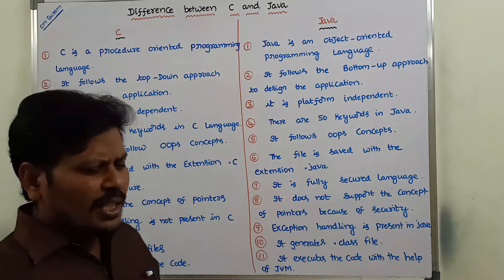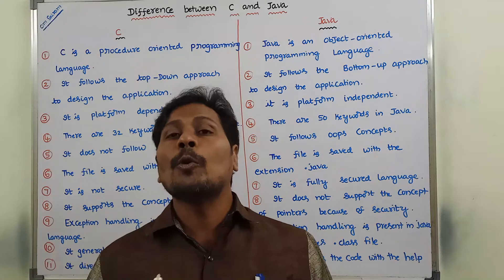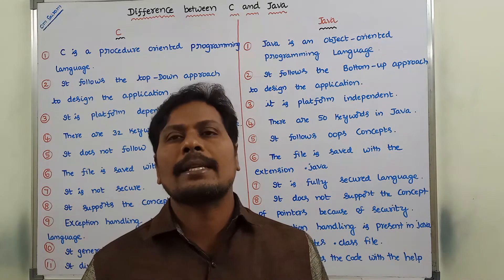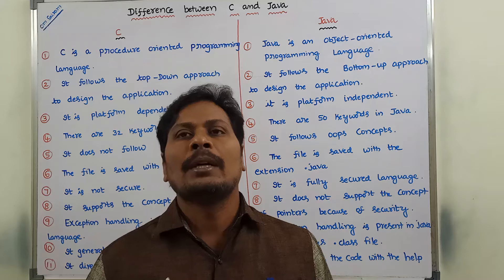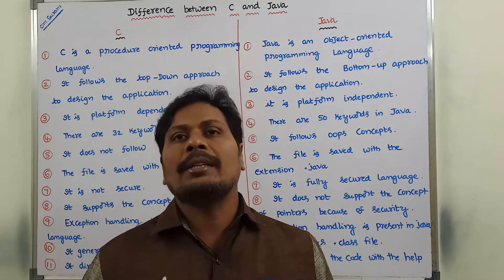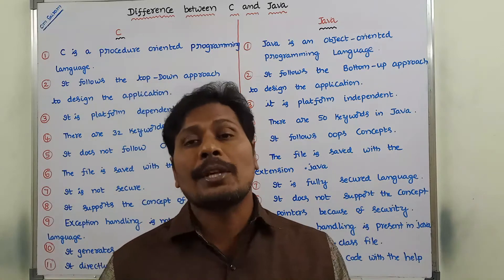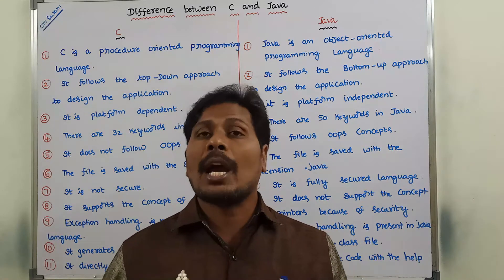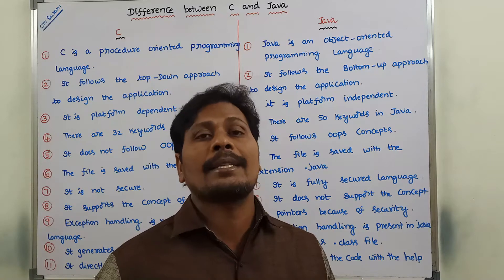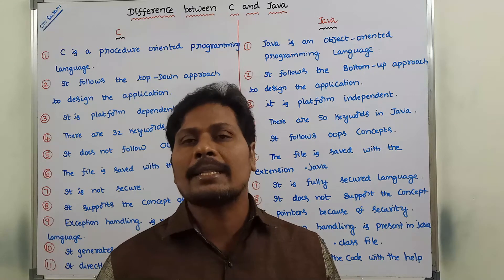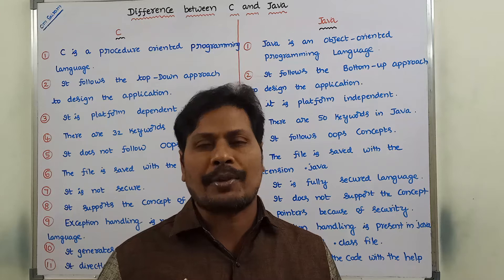Next: C language does not follow OOP concepts such as encapsulation, polymorphism, and inheritance. Whereas Java supports object oriented concepts such as inheritance, encapsulation, polymorphism, and data abstraction.